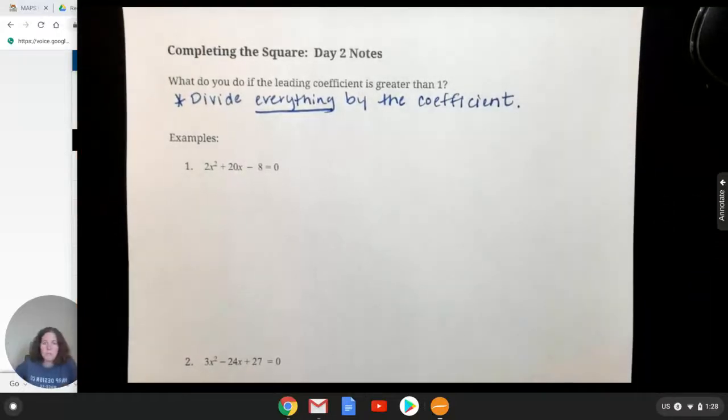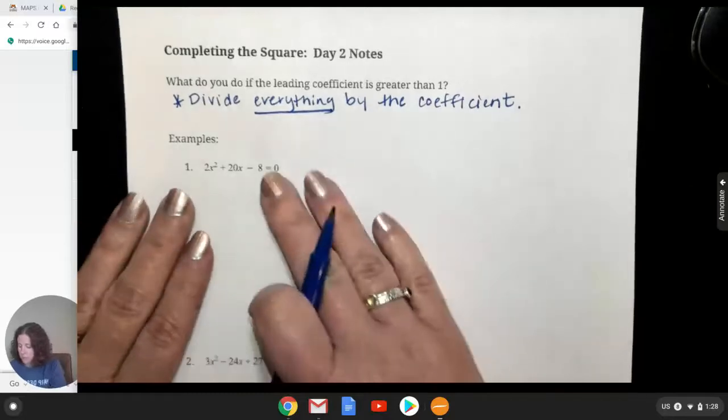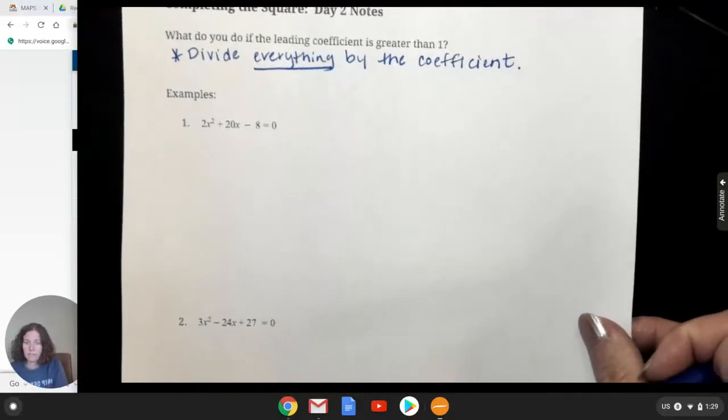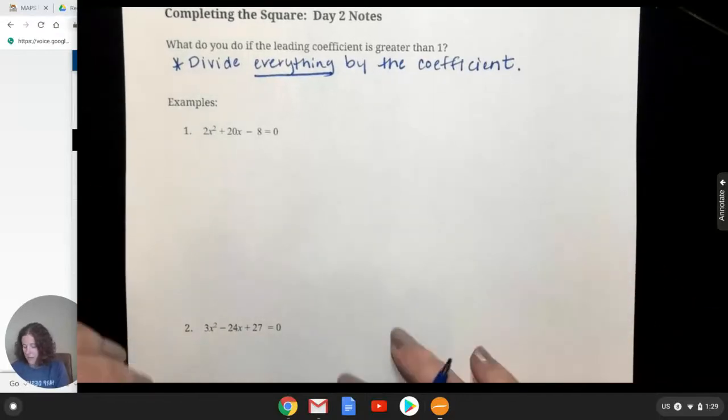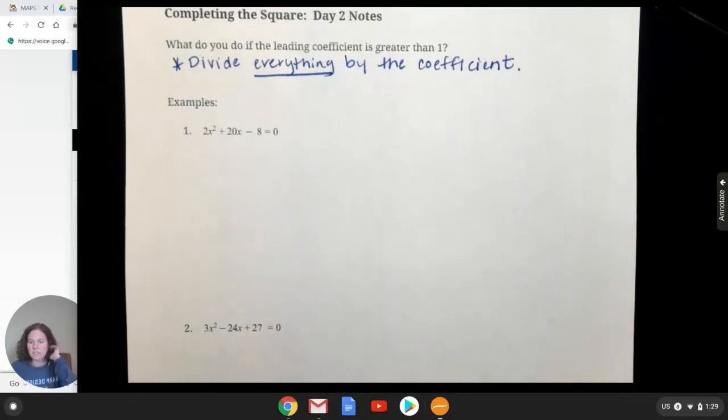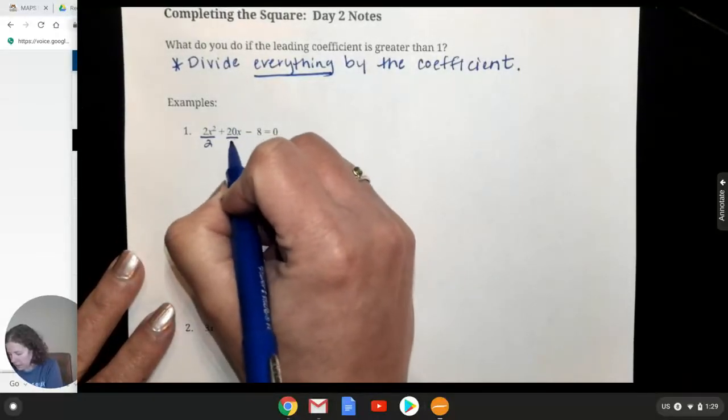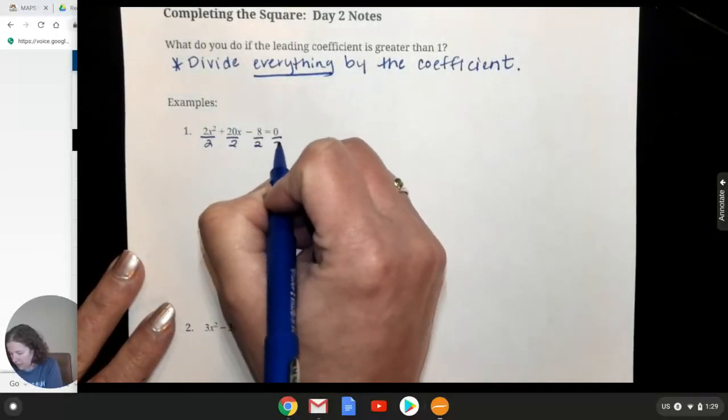Okay, so what we're going to do is we're going to go through, and then you just do the process. So you do the whole thing. So we're going to go through this one in a lot of detail together. And then after that, I would like you to pause and try number two kind of on your own and see if you've got it. All right, so the first thing that it asks us to do is if there's something there, we need to divide everything by that number.